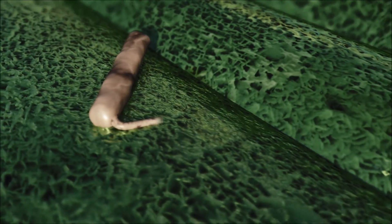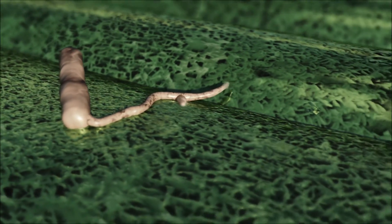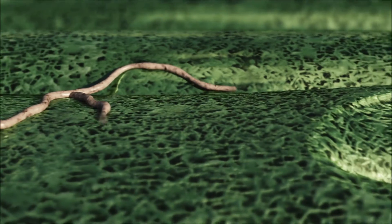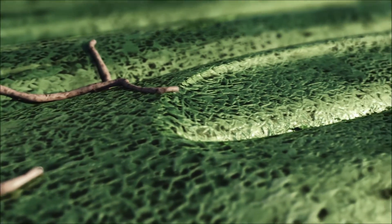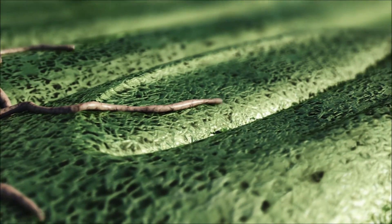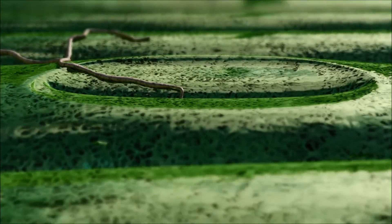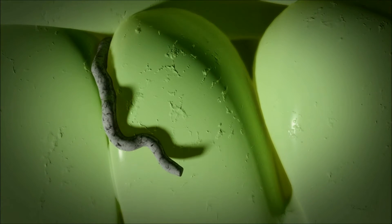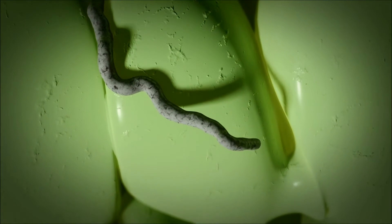The spores sprout hyphae, which grow and penetrate the plant through the stomata. In the early phase of infection, there are no visible symptoms. But inside the leaf, the disease's hyphae are absorbing nutrients, and especially sugars, passively from the host plant.